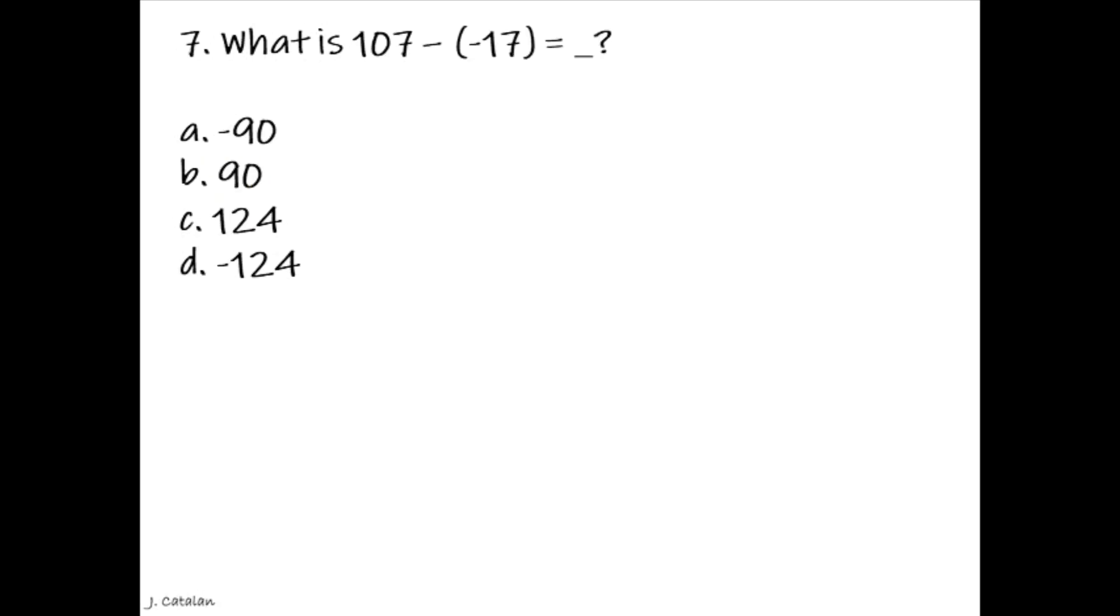Question. What is 107 minus negative 17 equals underscore. Answer. 124.